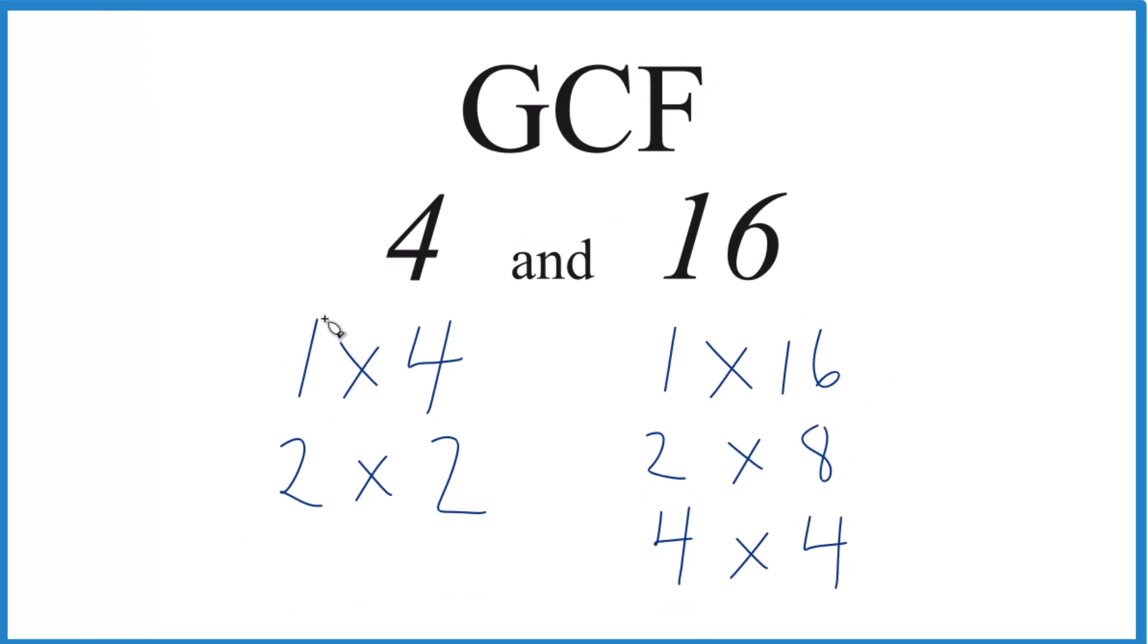So if we look at the factors in common, we have 1 and 1, so those are common. 2, that works, and then 4, and 4 here. And 4 is the greatest one between these two lists. That makes 4 the greatest common factor for 4 and 16.